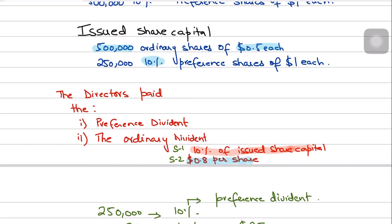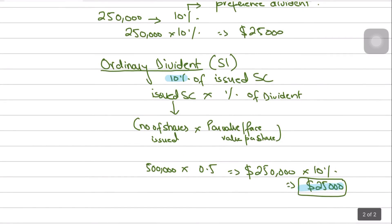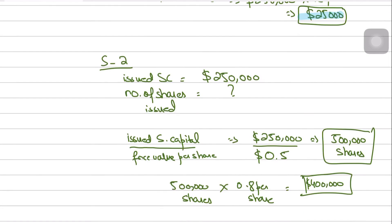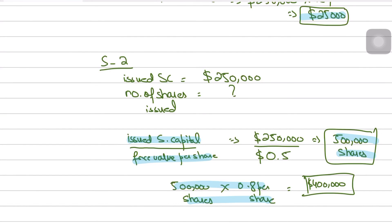For ordinary dividend there are two scenarios: the question may give a percentage, which you apply to the issued share capital as in scenario 1; or it gives a dividend per share, which you multiply by the number of shares issued as in scenario 2. If the number of shares is not given, divide the issued share capital by the face value per share to find it. Hope to see you all next time.